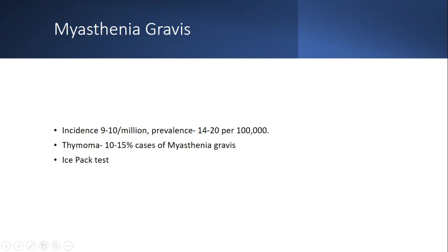Myasthenia is affected by environmental temperature, and fatigue worsening after exercise is common in neuromuscular conditions, but especially with bulbar symptoms it suggests myasthenia gravis. The ice pack test has very high sensitivity and is a bedside test helpful in ocular myasthenia gravis. There are specific criteria: it requires at least a 2 mm change in ptosis and the ice pack must be applied for two minutes.